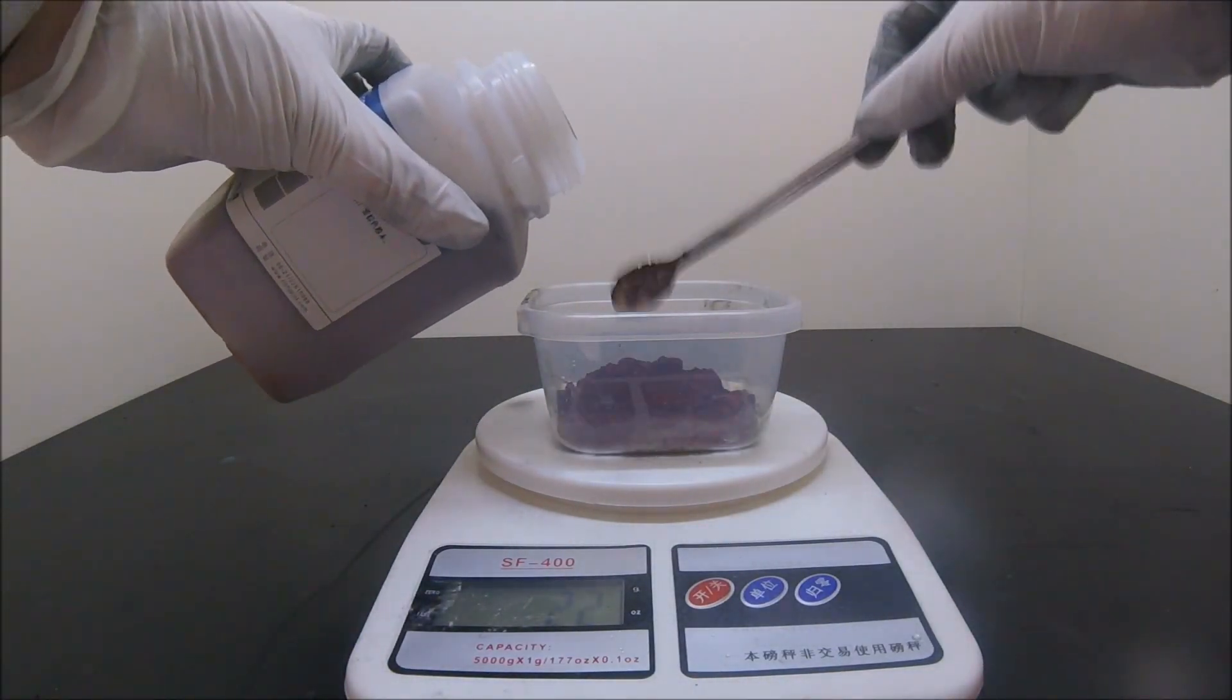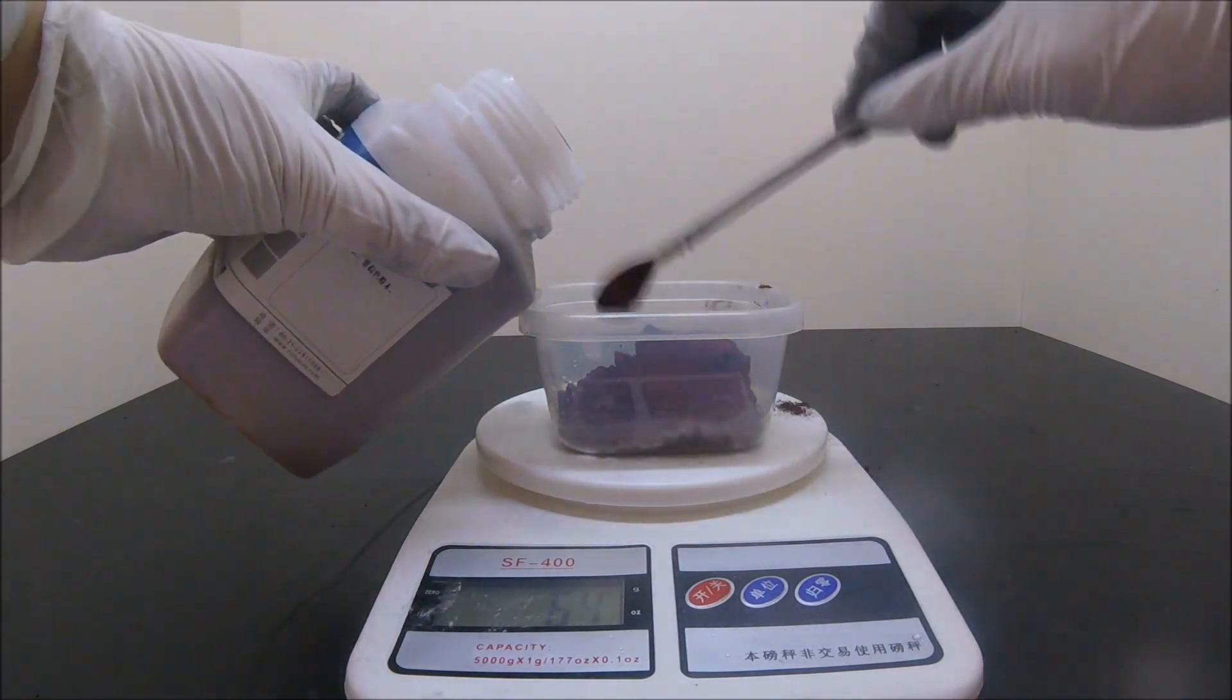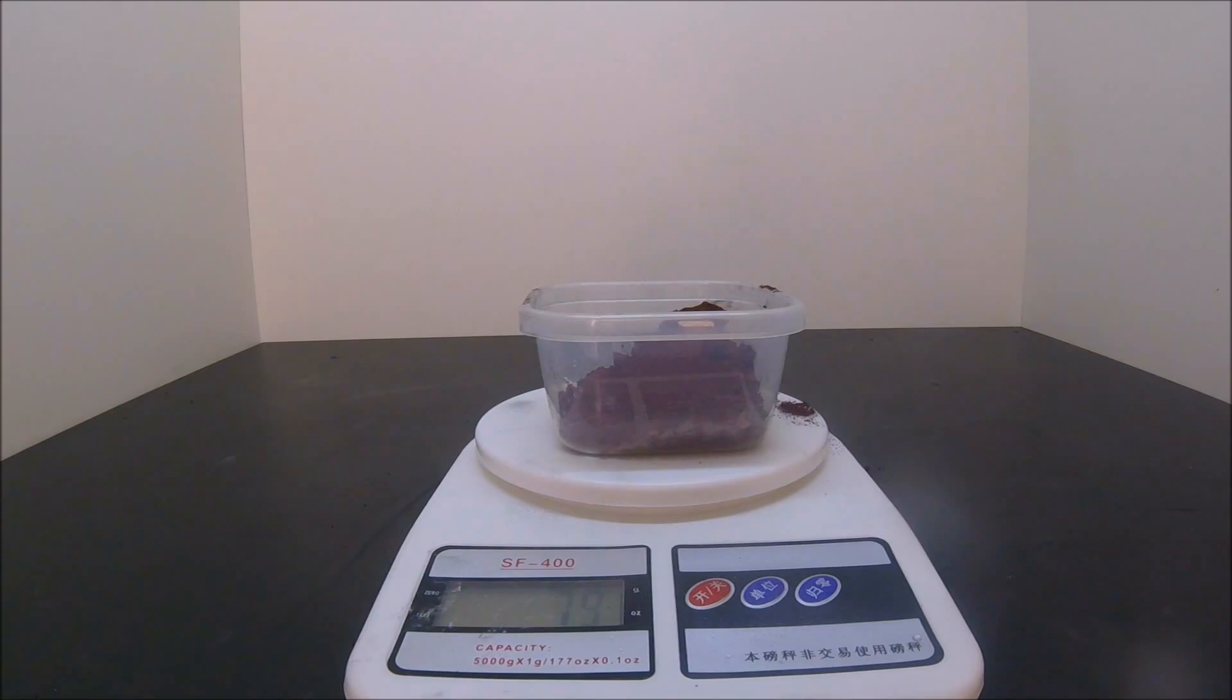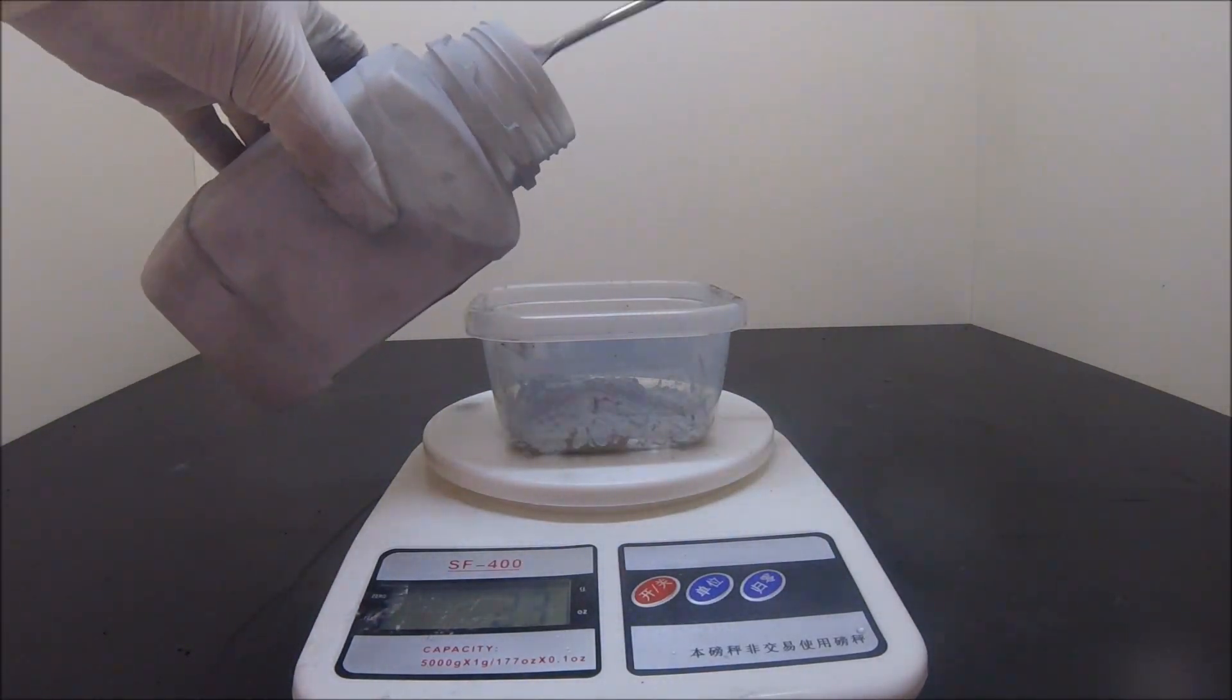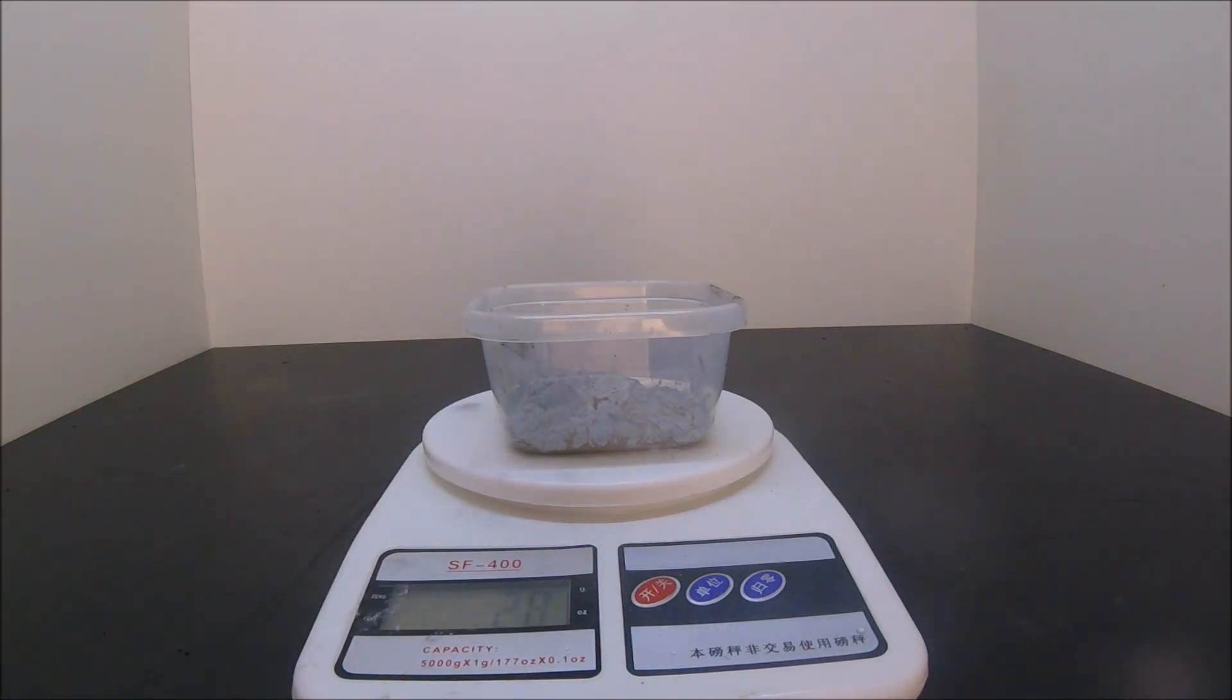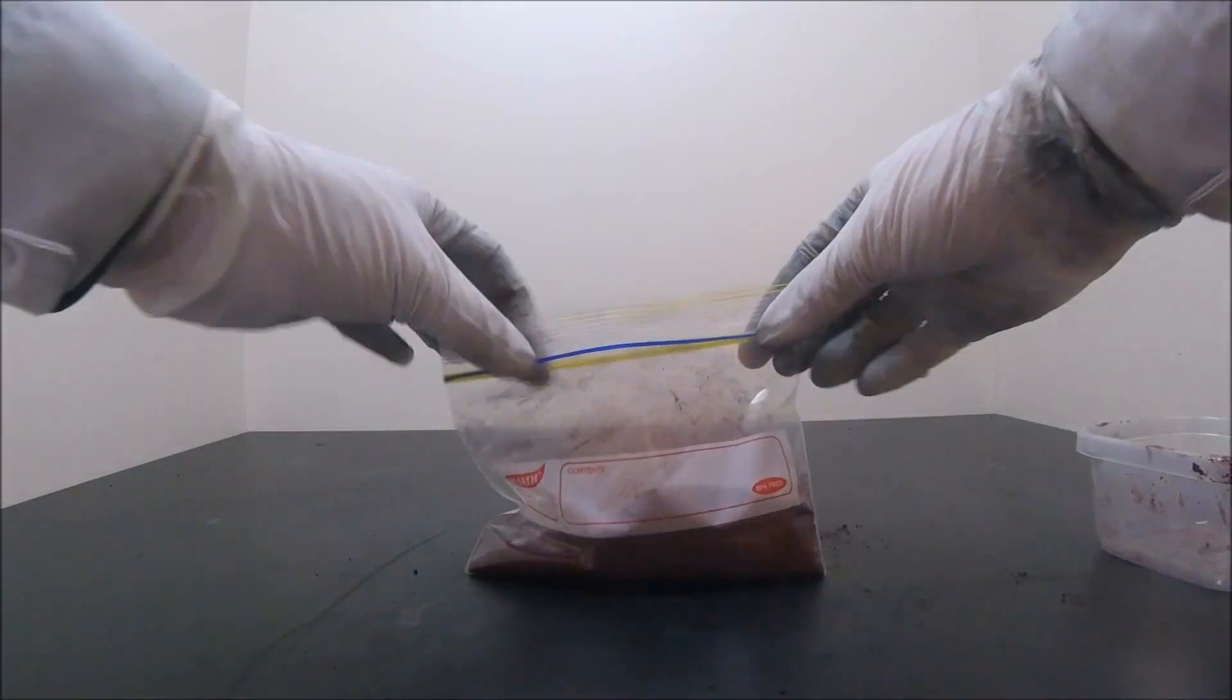First, weigh out 80 grams of iron oxide. The amount that is used does not need to be exact. A regular kitchen scale will get the job done just fine. Then weigh out 27 grams of aluminum powder. The particles need to be small enough to keep the reaction self-sustaining. By using a resealable bag, the two components are evenly mixed.